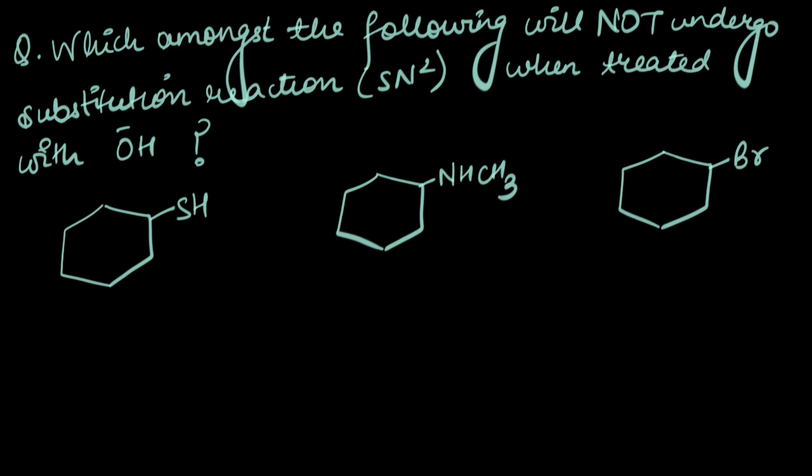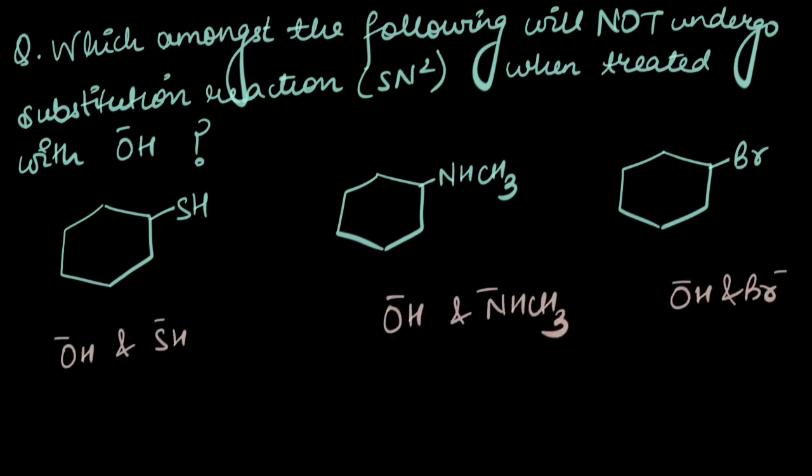If the leaving group is less stable individually as compared to the attacking nucleophile, it wouldn't want to leave. Try doing it yourself first before we attempt it together. So we need to compare OH⁻ and SH⁻, OH⁻ and NHCH₃⁻ where the negative charge is on the nitrogen atom, and OH⁻ and Br⁻.